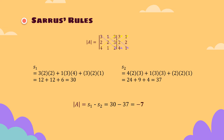For Sarrus' rule, we need to identify S1 and S2. S1 is the purple line and S2 is the yellow line. We got S1 equals to 30 and S2 equals to 37. For the determinant of A, we need to subtract S1 from S2, so we got determinant of A equals to negative 7.